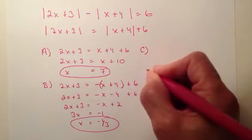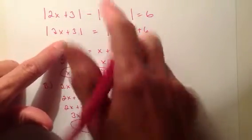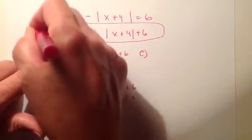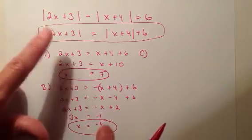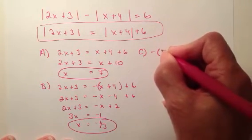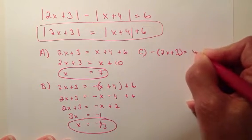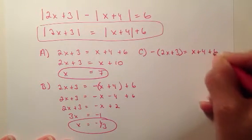Now I can keep doing this. I'm not going to do them all. So for c, I can assume, let's see, we did positive, positive. Oh sorry, this is my equation here. So I did positive, positive. I did positive, negative. So let's do negative, positive. So let's do in parentheses negative 2x plus 3 equals x plus 4 plus 6, because that one's positive in this case.